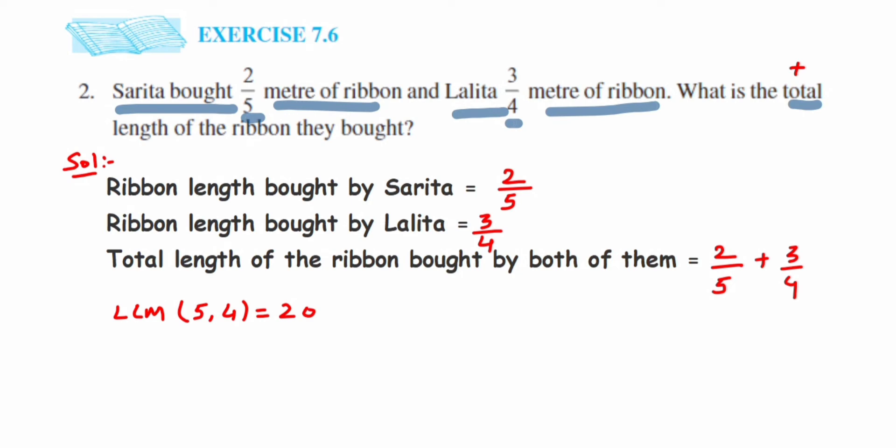We'll find the equivalent fraction of both fractions with denominator 20. For 2/5, we want 20 in the denominator. With 5, what should I multiply to get 20? It will be 4. Multiply 4 in the numerator also. We'll get 2×4=8, so it's 8/20.